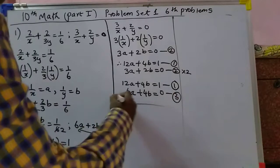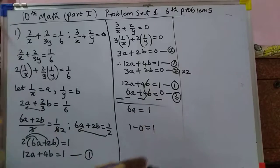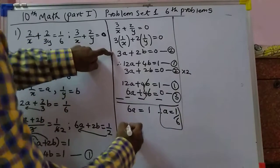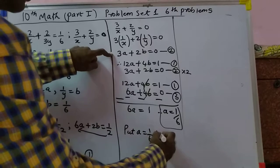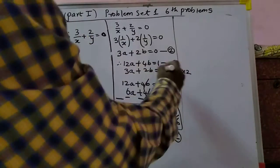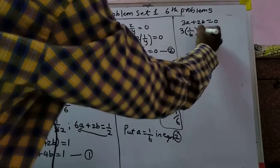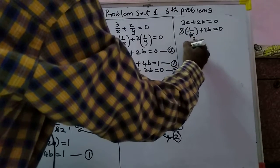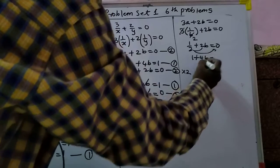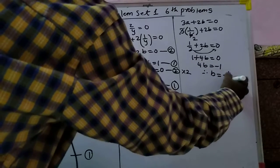Now subtract equation 3 from equation 1. That gives 6a equals 1 minus 0, so 6a equals 1, therefore a equals 1 by 6. Putting a equals 1 by 6 into equation 2: 3 into 1 by 6 plus 2b equals 0, which is 1 by 2 plus 2b equals 0. Multiplying through: 1 plus 4b equals 0, therefore 4b equals minus 1, so b equals minus 1 by 4.